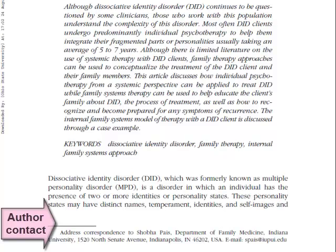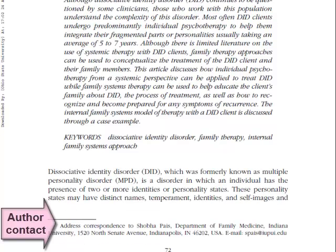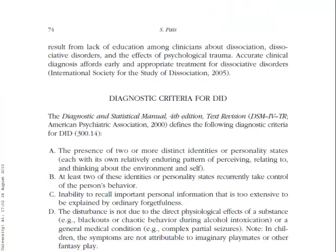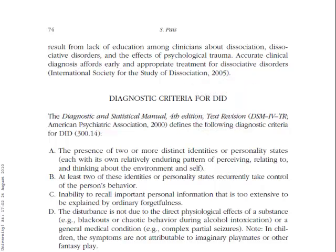Let's continue scrolling through the article. Notice on this particular page, we have an item cited in parentheses at the end of this paragraph. This is information that should appear in the references list at the end of the article.